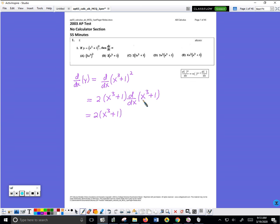So this is the derivative of two things being added, so the derivative of x cubed is 3x squared, plus the derivative of 1 would be 0.